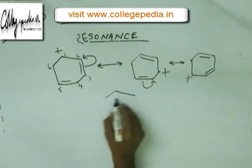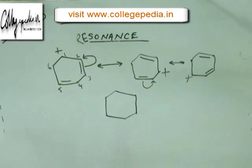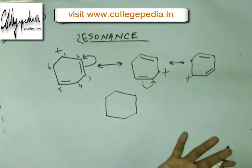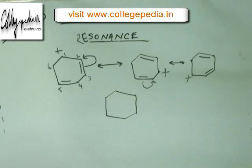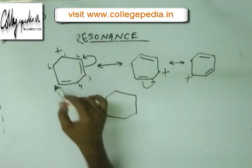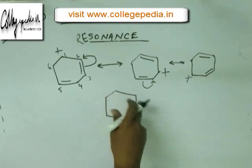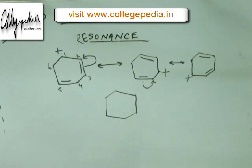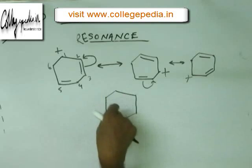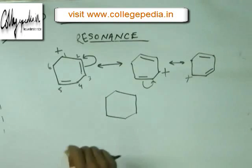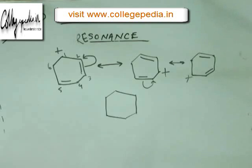Now it's time to draw the hybrid. To draw the hybrid, draw the basic carbon skeleton without the charge and without the pi bonds. First look at the position of the charges — the charge is at C1, C3, and C5. There is only one unit of charge in the molecule and that one unit is distributed at three positions. We divide that plus charge at three positions. It may not be +1/3 at each position — the position where the charge is more stable will have more of the plus charge, so it will not necessarily be 33%, 33%, 33%.